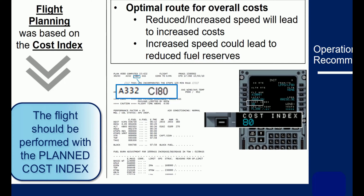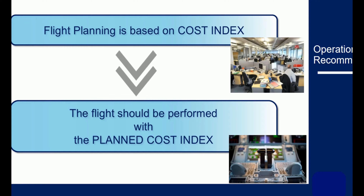This leads to two problems: firstly a more expensive flight, and also a loss of crew confidence in predictions. Over a period of time this results in crews uploading more contingency fuel, creating greater and greater fuel burns. Remember, the Cost Index is derived by people on the ground with access to your airline's finance details. In the cockpit you simply do not have access to all of this data. The guidance is simple: fly at the Cost Index used on your flight plan. With the information available to you in the cockpit, you simply cannot do any better.